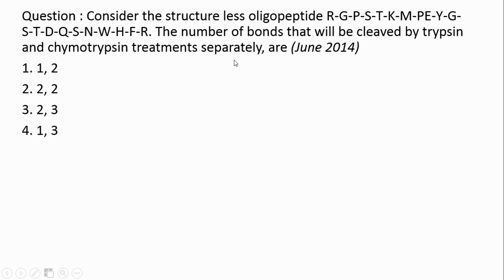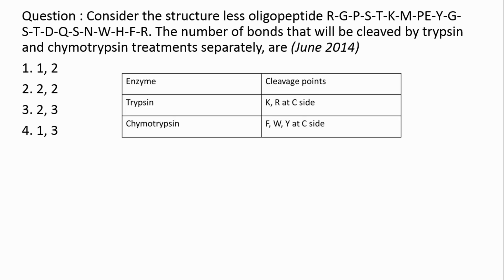Previously I had done a video on various enzymes and their cleavage points — I suggest you watch that video beforehand. But if you haven't, I will be using a small tabular column which has enzymes and their cleavage points. Trypsin cleaves at K and R at the C-terminal. K stands for lysine and R stands for arginine.